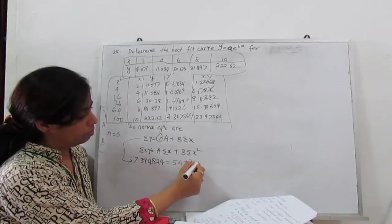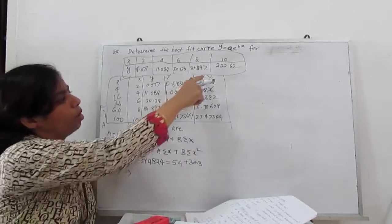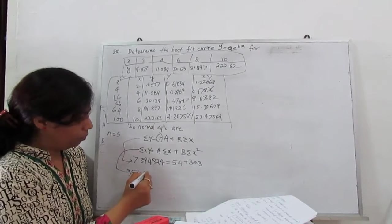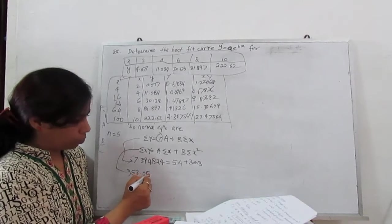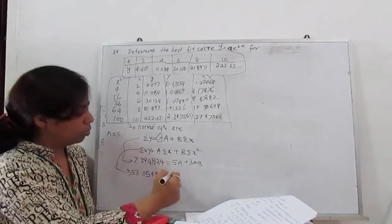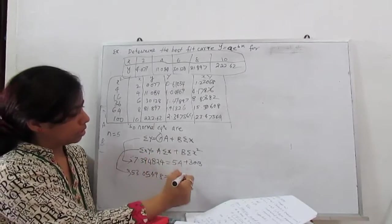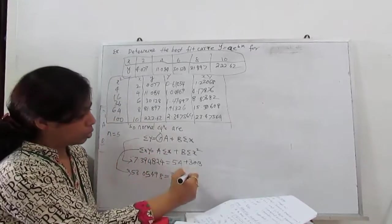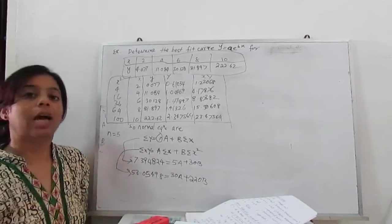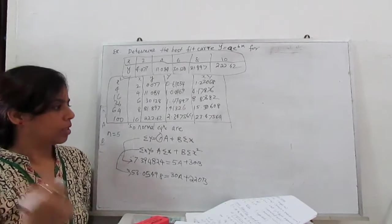Next is summation xY, sum of this column is 53.05498, equal to 30A. Summation x is 30 plus sum of x square is 220. So 220B. Now these are the 2 equations, 2 unknowns, A and B. You can solve for it.